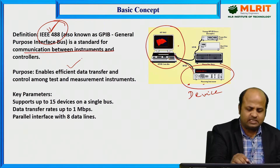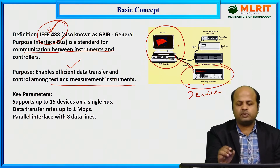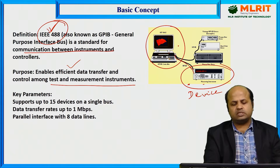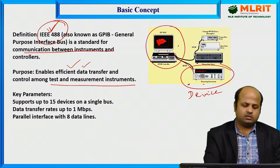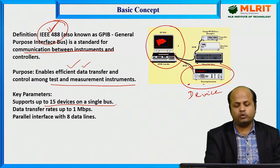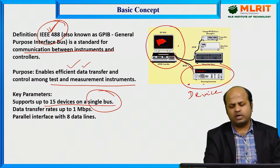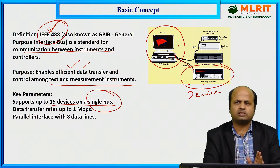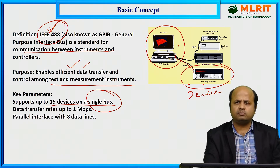So, what is its purpose? It enables efficient data transfer and control among test and measurement instruments. What are its key parameters? IEEE 488 can support up to 15 devices on a single bus. Bus here is nothing but the data transfer medium — it may be wire medium or optical fiber medium. Here the medium is wire.